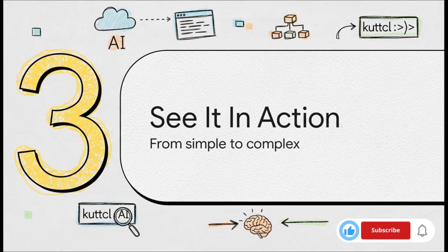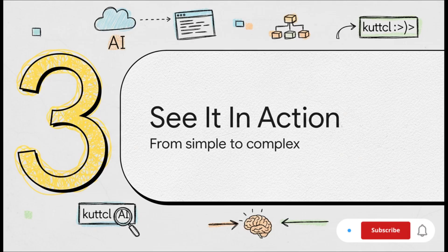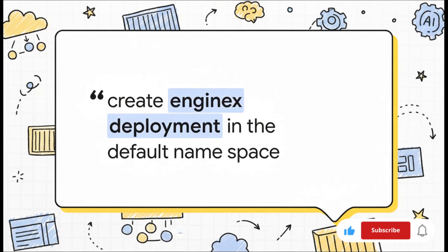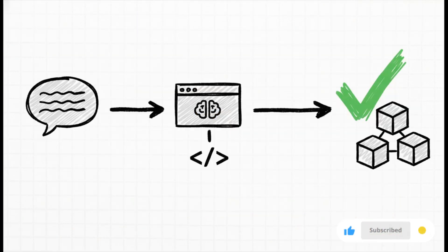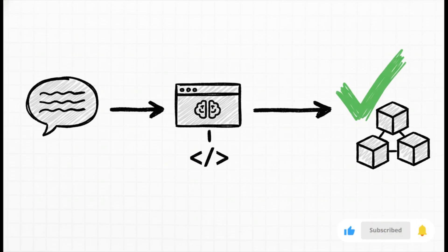Setup is out of the way — now for the really fun part. Let's put this thing to the test. We're going to see how kubectl AI handles a few real-world tasks, starting easy and then ramping up the difficulty. First up, a classic hello world for Kubernetes: we ask it in plain English to create an NGINX deployment. No fiddling with YAML files, no trying to remember command flags, just a simple sentence. And boom, it works. The tool figures out the right command, shows it to you for a quick sanity check, and creates the deployment. A quick kubectl get pods confirms it's there.